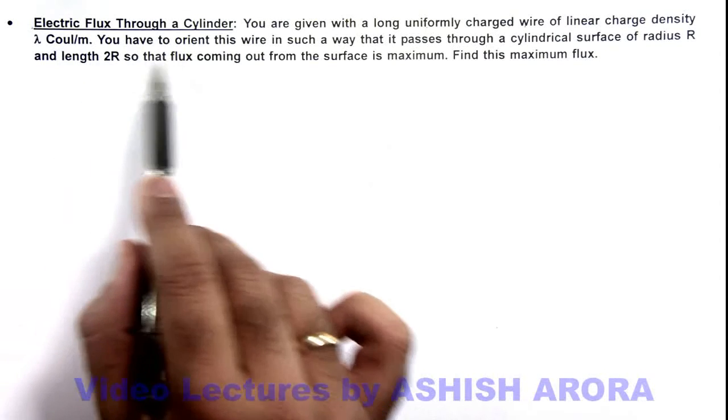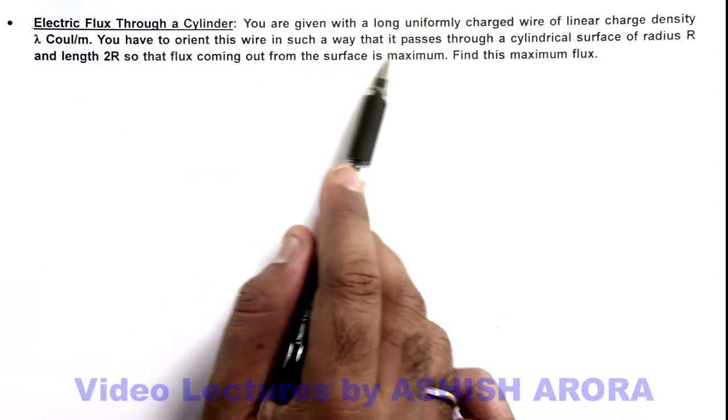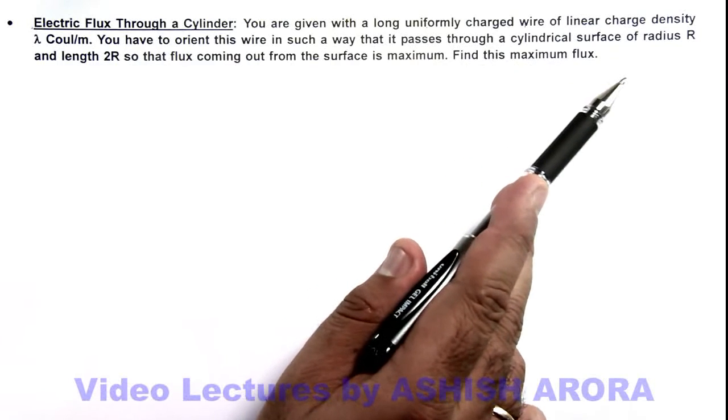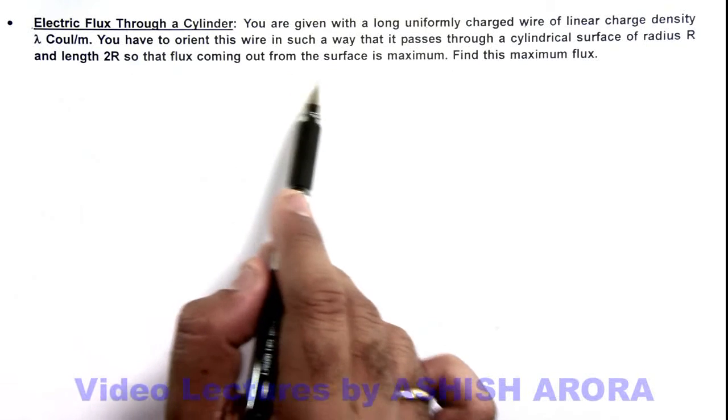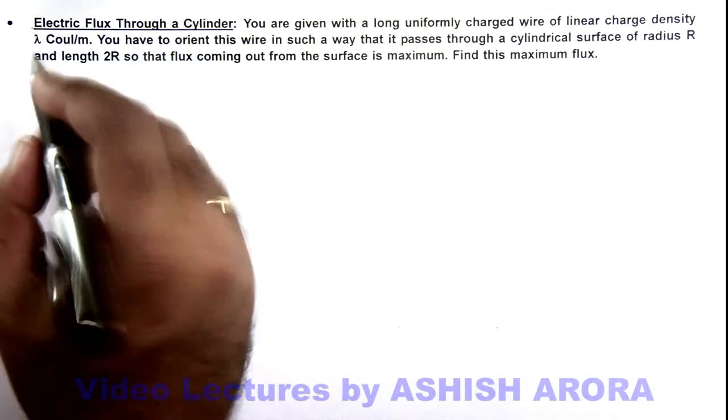And you have to orient this wire in such a way that it passes through a cylindrical surface of radius R and length 2R, so that the flux coming out of the surface is maximum. We are required to find this maximum flux.